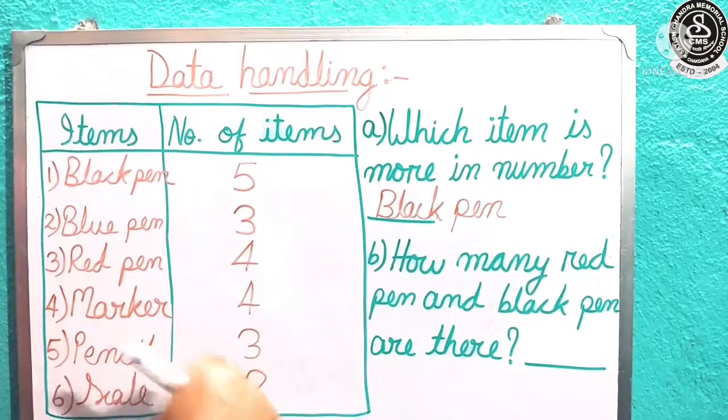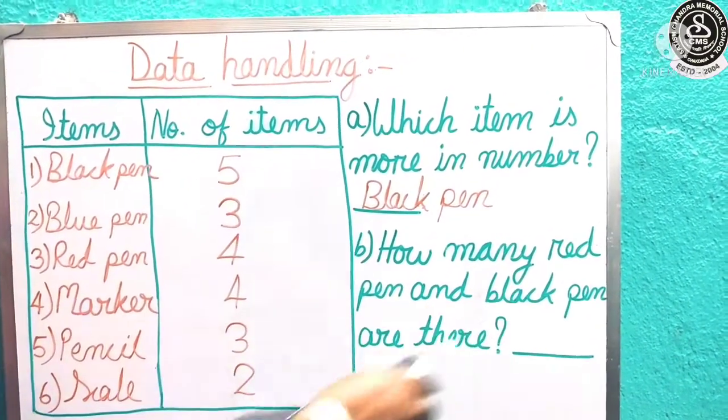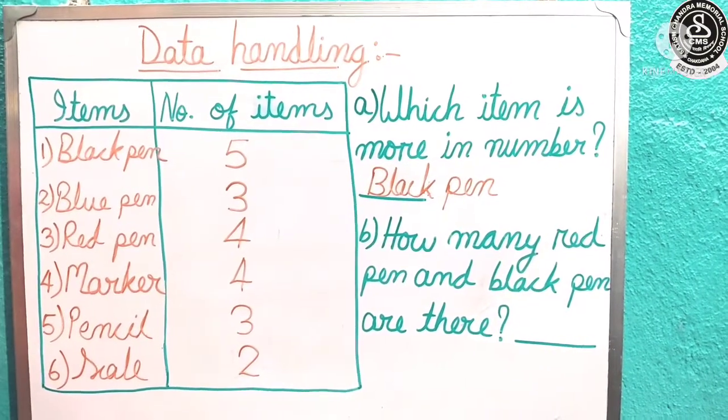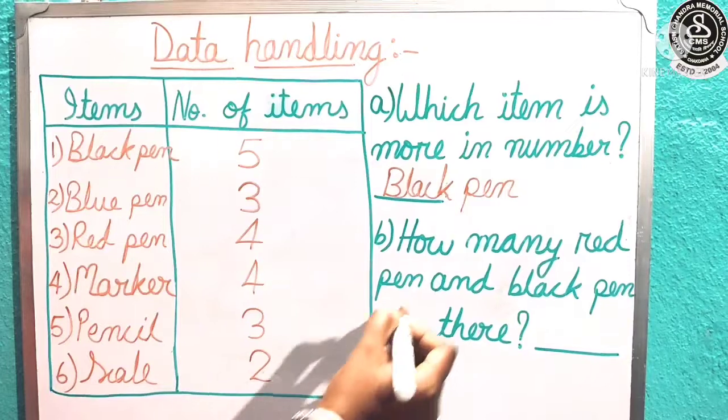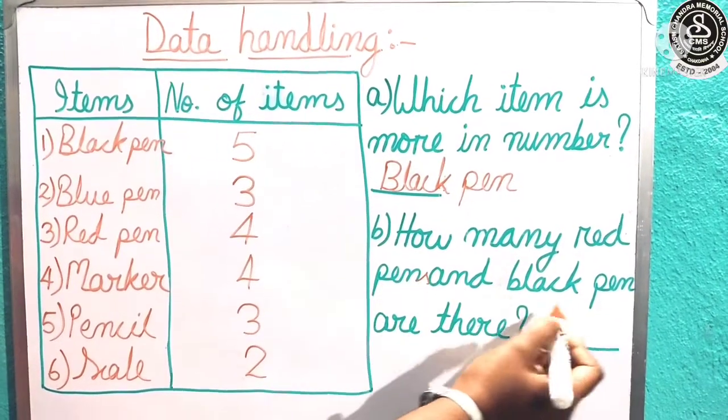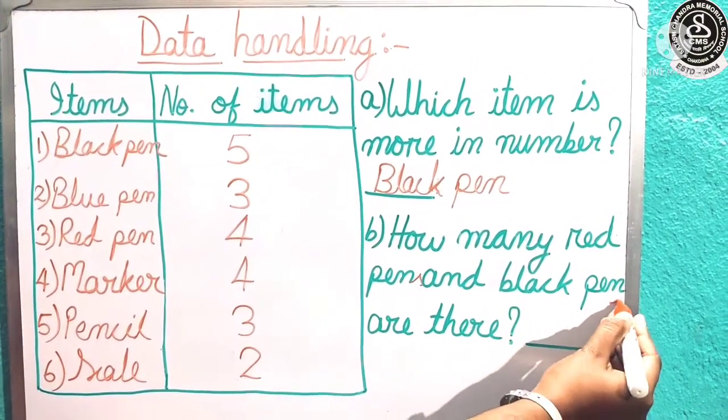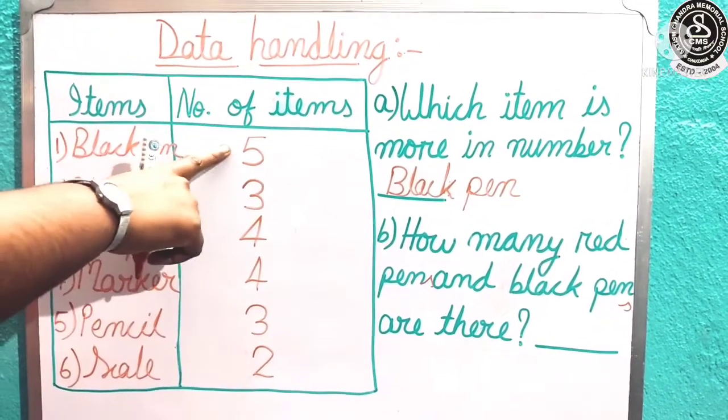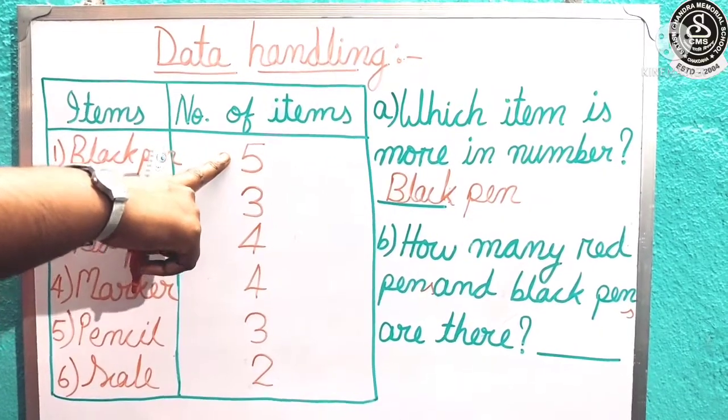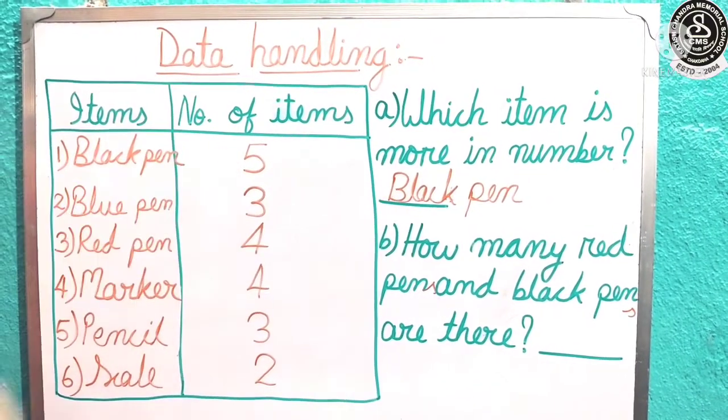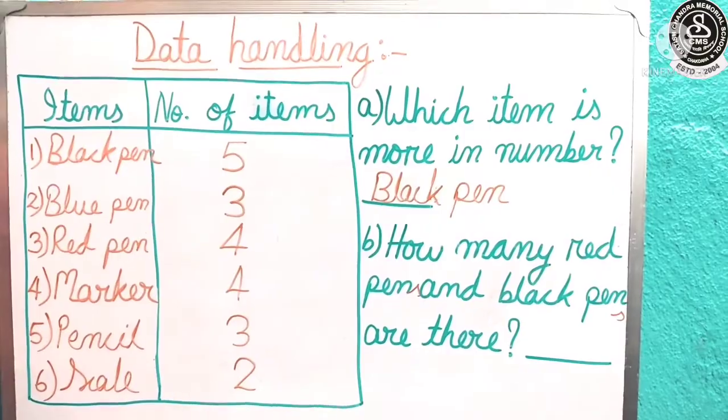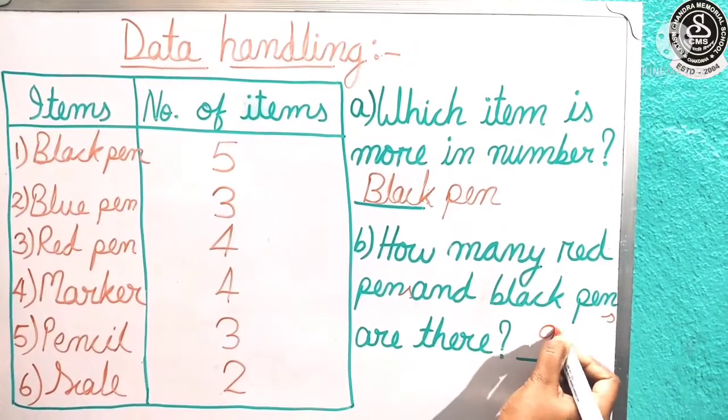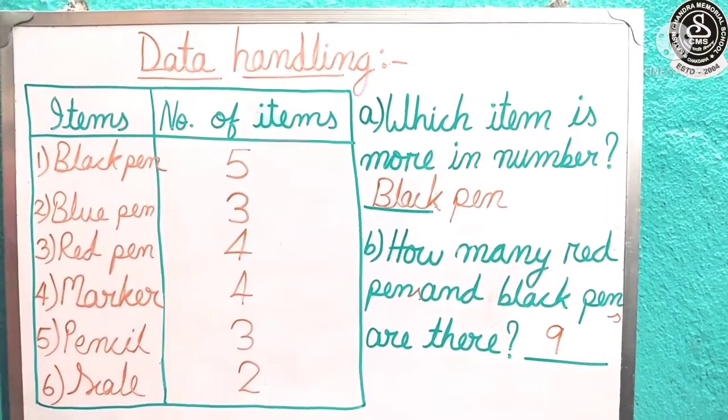Now number B: How many red pen and black pen are there? Means we have to find out the total. You can add red pens and black pens are there. Red pen: 4, and black pen: 5. 4 plus 5, what is the total children? 9. Very good. The answer of number B will be 9.